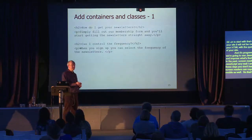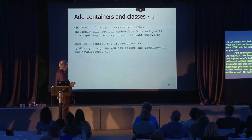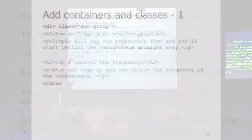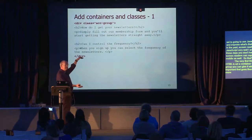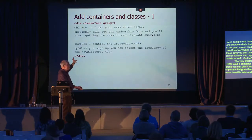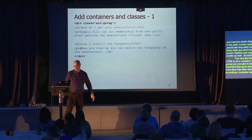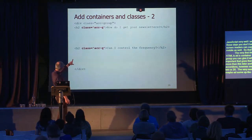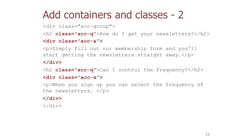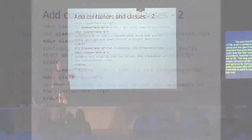The very first thing we do in our HTML is add a container — I've given it a class of 'acc-group'; you can choose whatever class you want. That's important because we'll do more with it later — it encloses all your accordions, whether two or twenty. We also add classes to the heading and wrap the answer in a panel div, since we want to hide and show it.